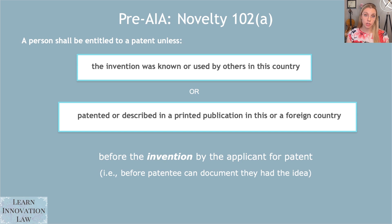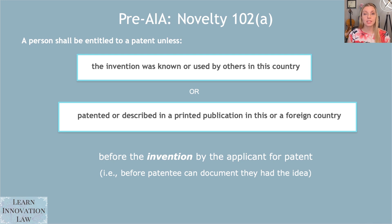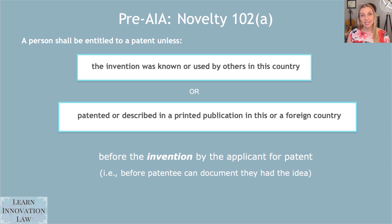These activities under pre-AIA follow what's called first to invent, meaning that instead of looking at the filing date, we're looking to see whether these activities happened before the invention by the applicant — before the person conceived of the idea for the patent. There are some additional rules that in order to actually benefit from that earlier conception date, you have to have a certain amount of diligence in reducing the invention to practice. Needless to say, this can be complicated, so consult an attorney if you have questions on this.